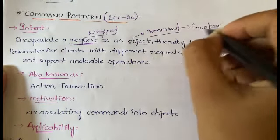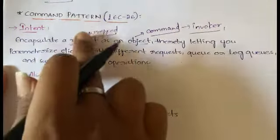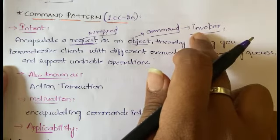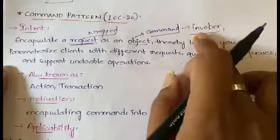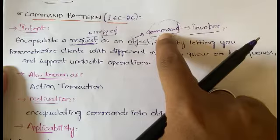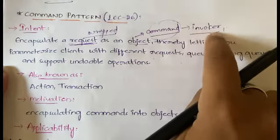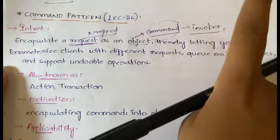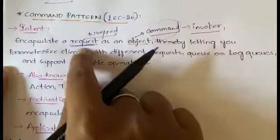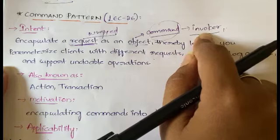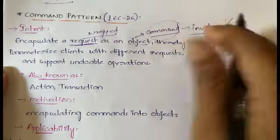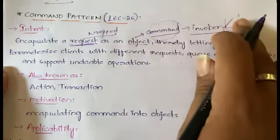That command is then passed into an invoker object. The invoker object will search for the appropriate object which can handle this particular command or request. It searches among all available objects, finds the correct match, sends the command to that object, and that object executes the request. So: the request is wrapped as a command, sent to the invoker, which finds the right handler and executes the request.